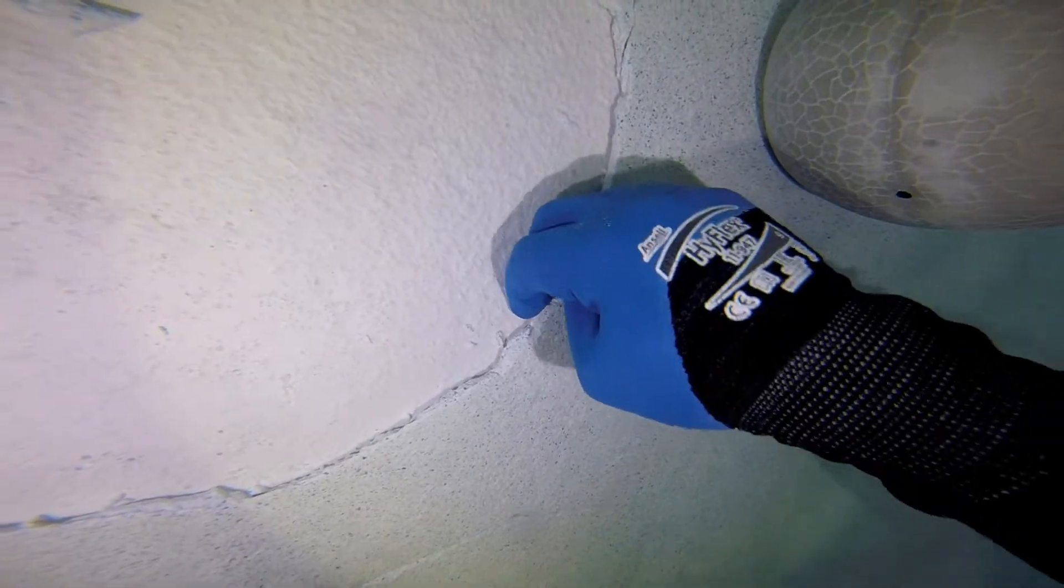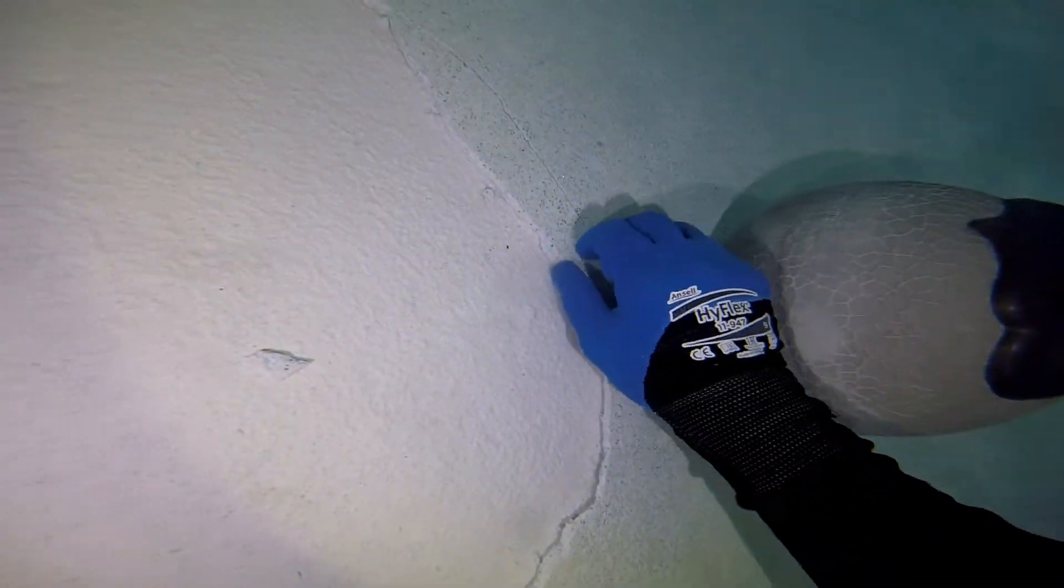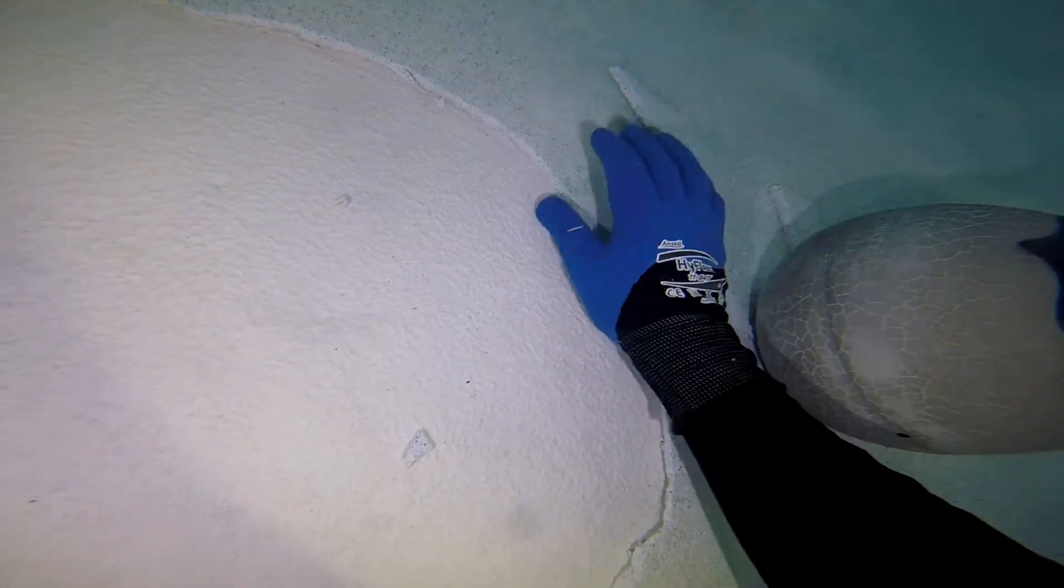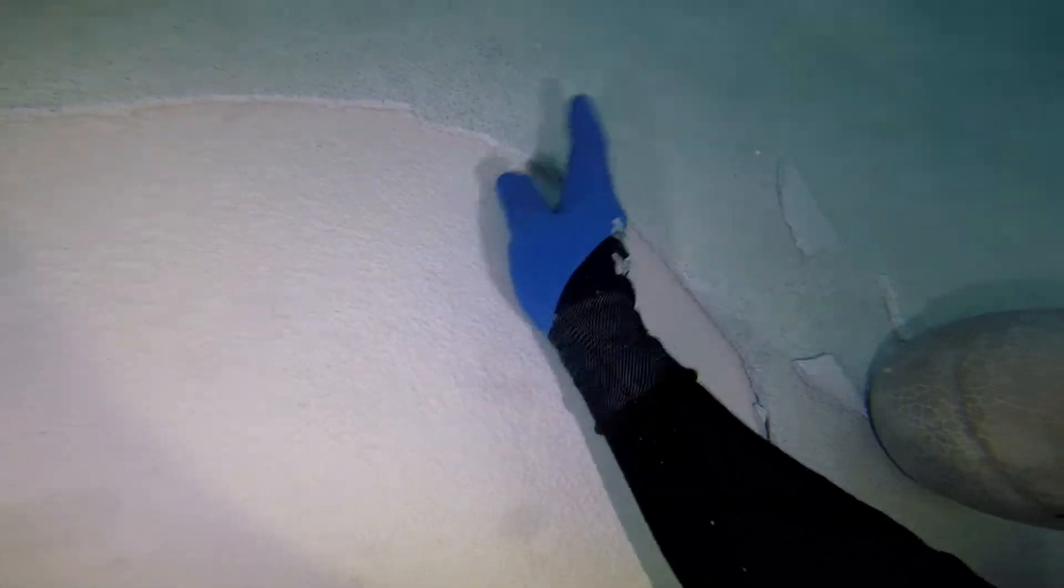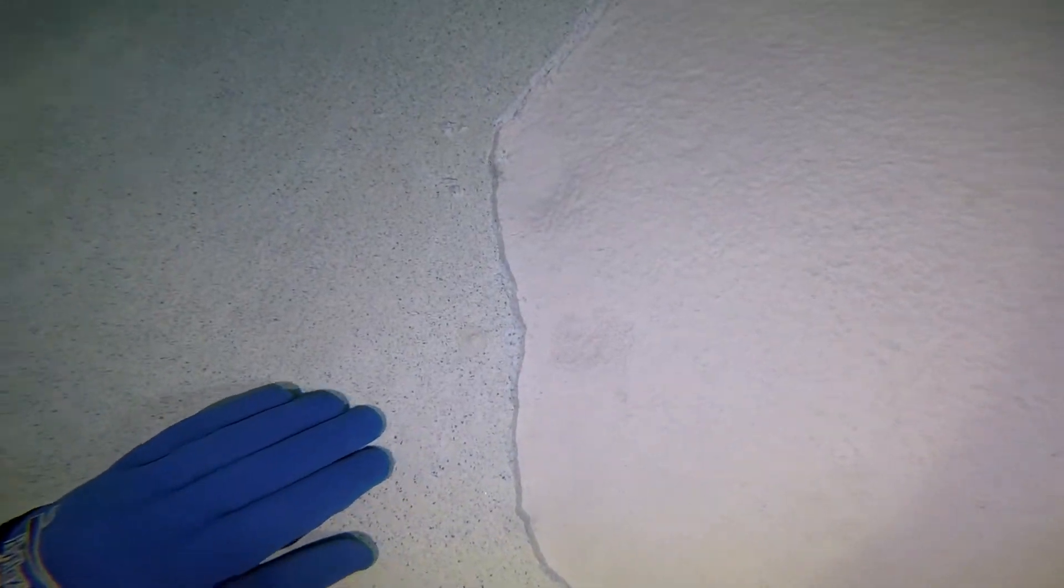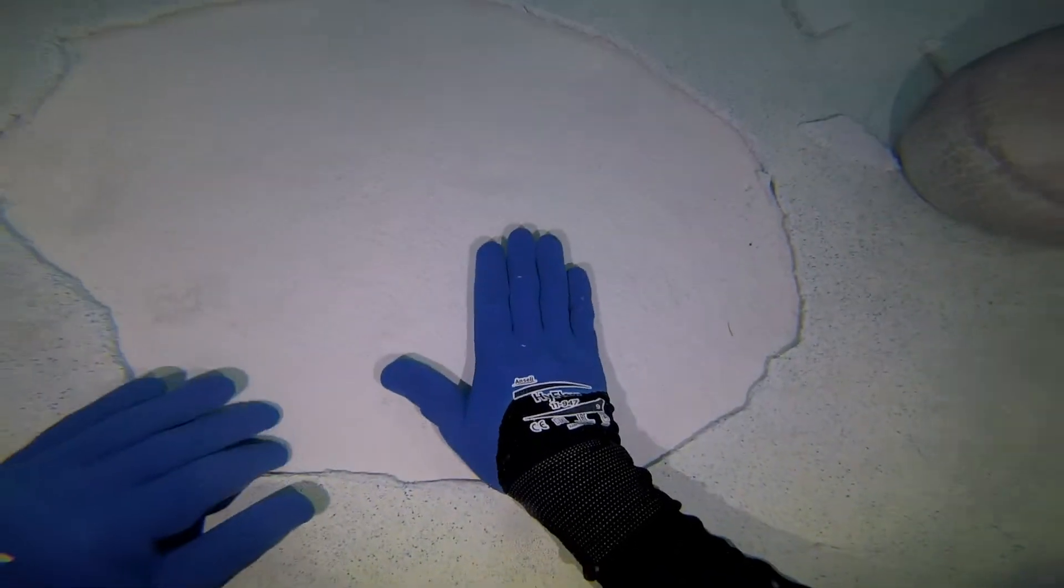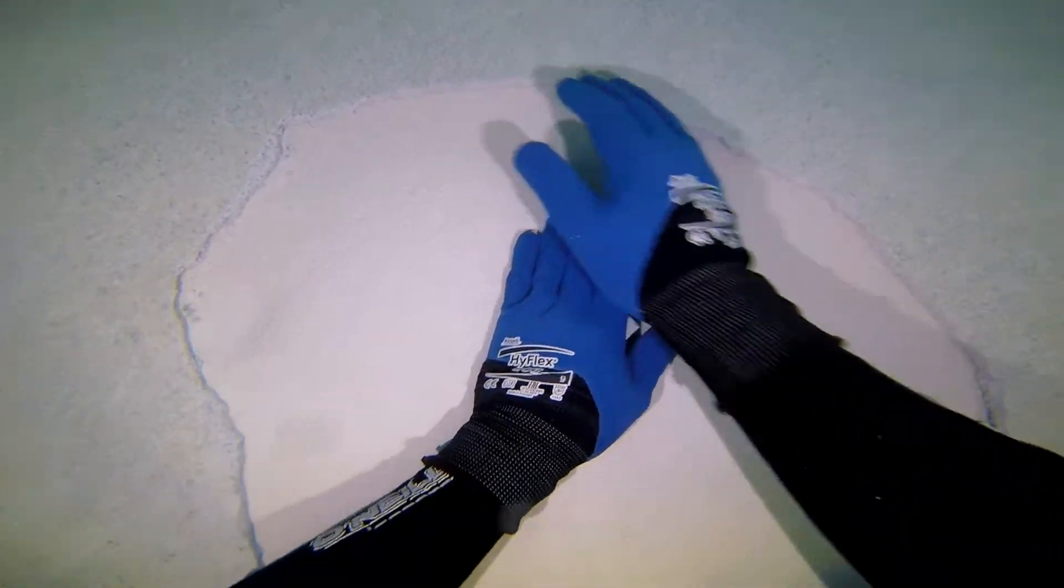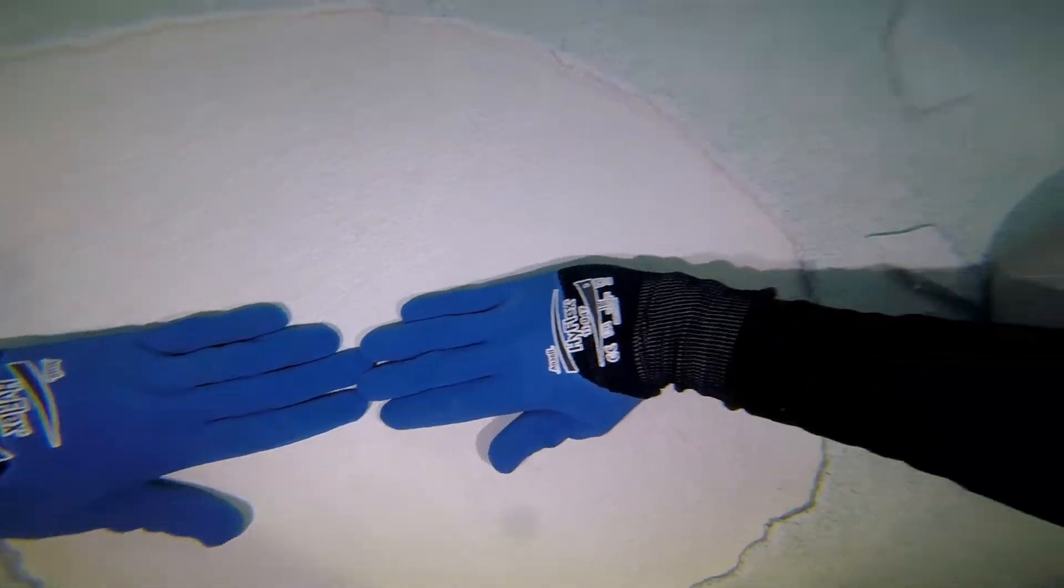So I'm going to sort of pull the edges back and make sure that I've got an accurate idea on how much plaster I'm going to need to be able to make this repair. You see I do about two and a half hands each way. It's just kind of a rough estimate. I just need to get an idea on measurement.